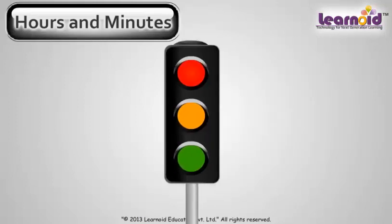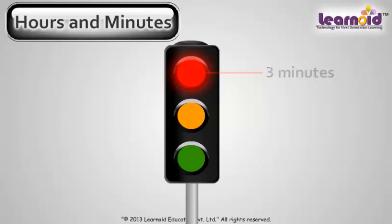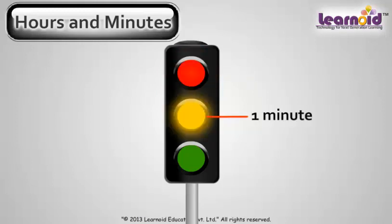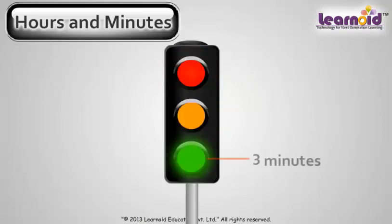A traffic light changes in minutes. The light is red for 3 minutes, then changes to yellow for 1 minute, and then green for 3 minutes.